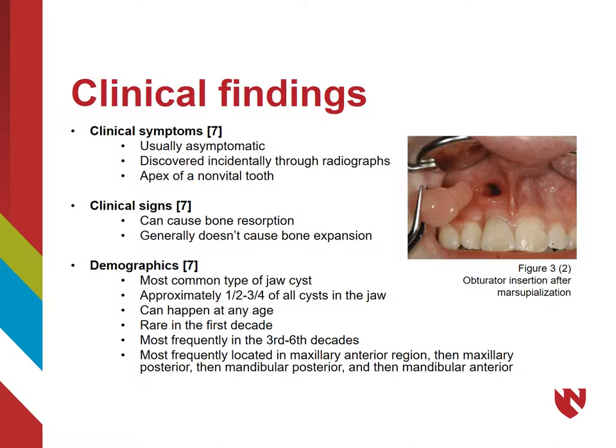Radicular cysts are extremely common, especially in the jaw. Approximately one-half to three-fourths of all cysts in the jaw are radicular cysts. Being so common, these cysts can happen at any age. They are rarely seen in the first decade of life, however, and occur most often in the third to sixth decades. Radicular cysts can most frequently be observed in the maxillary anterior, followed by the maxillary posterior. In the mandible, they are more common in the posterior than the anterior.